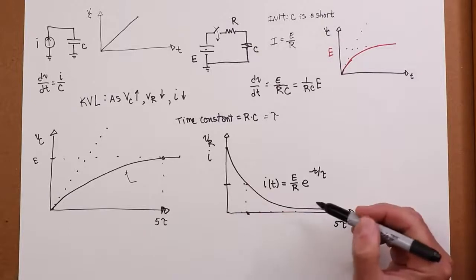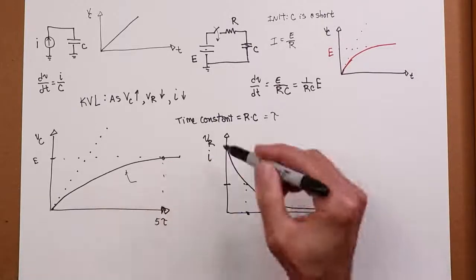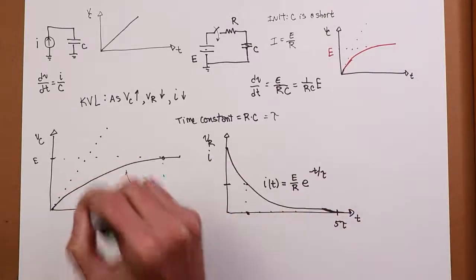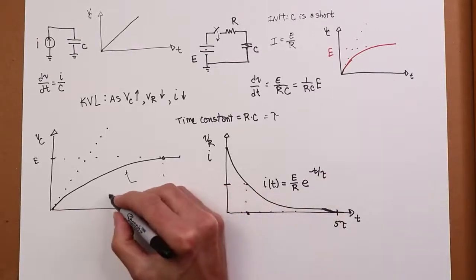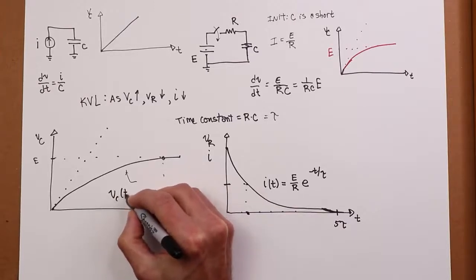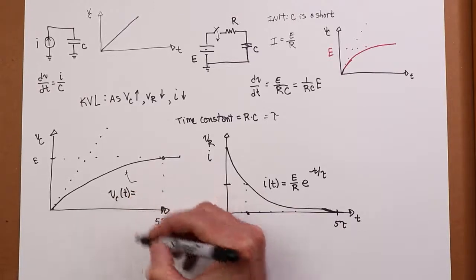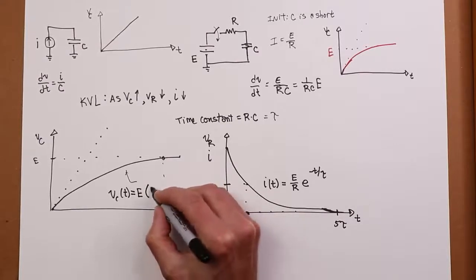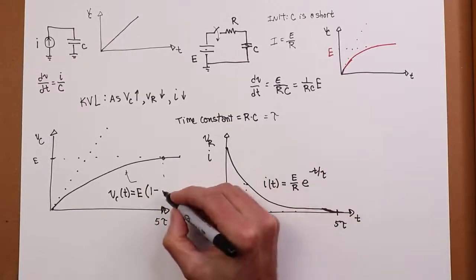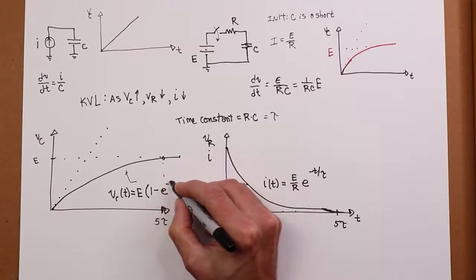So if this is the decay, then one minus the decay gives us the rising, in other words, the voltage sitting across the capacitor. So we could say that VC, again, is a function of time. It's going to be its maximum value, E, times one minus the same quantity, e to the minus T over tau.